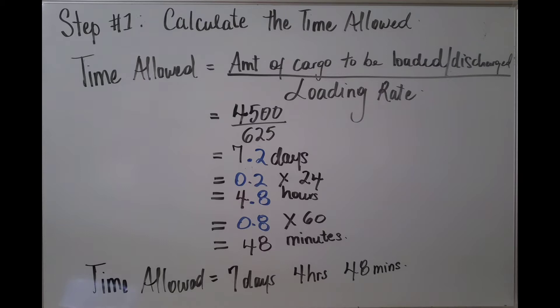The formula for calculating the time allowed is the amount of cargo to be loaded or discharged divided by the loading rate. In this case, the amount of cargo to be loaded is 4,500 tons and the loading rate is 625. The answer we got is 7.2 days. From that, we take the 7 days and work out the hours and minutes. To find the hours, we take the .2 and multiply it by 24 and get 4.8 hours. To get the minutes, we multiply the 0.8 by 60 minutes and get 7 days, 4 hours and 48 minutes.